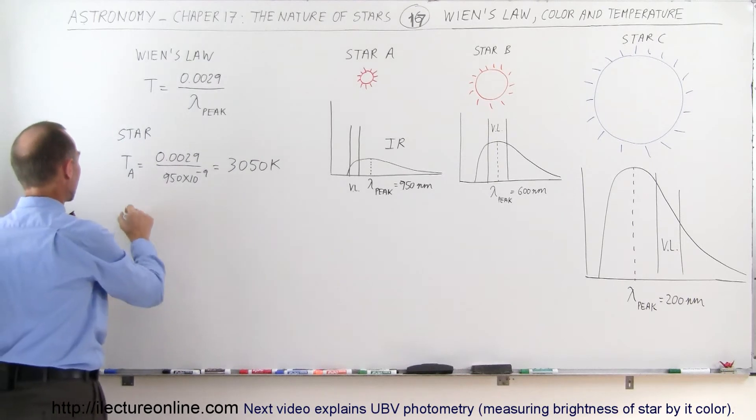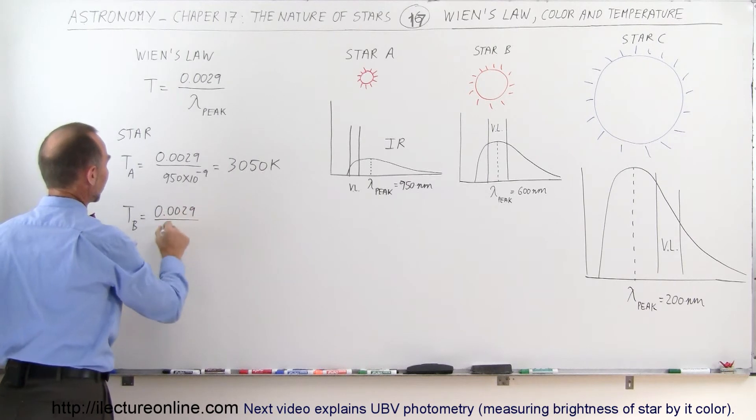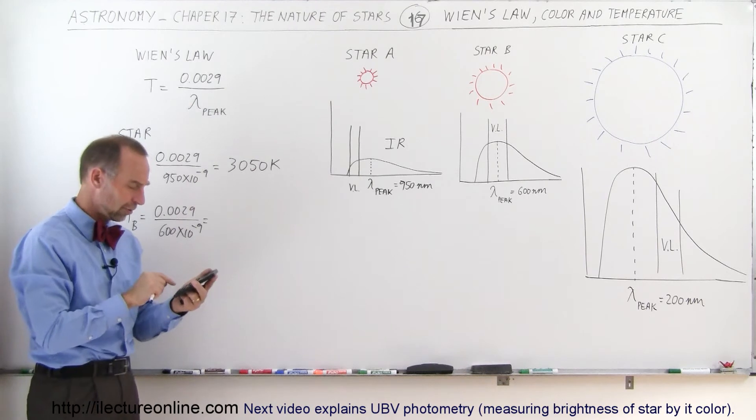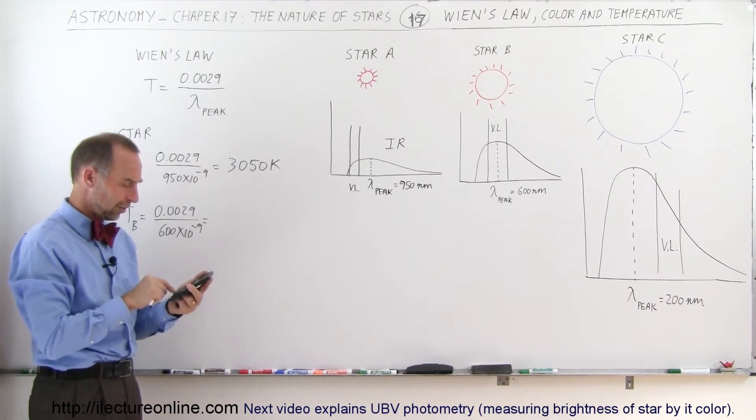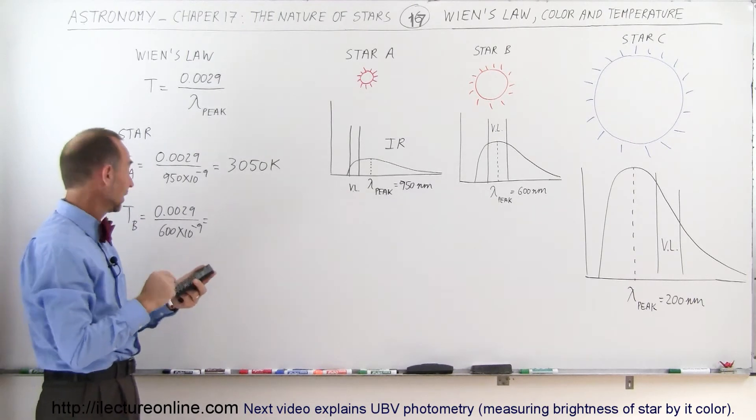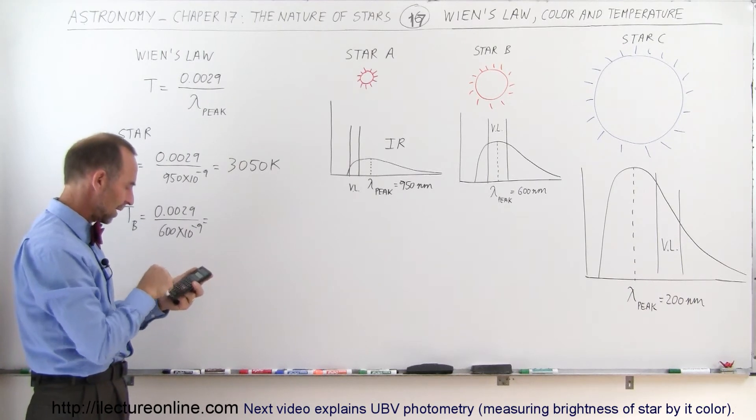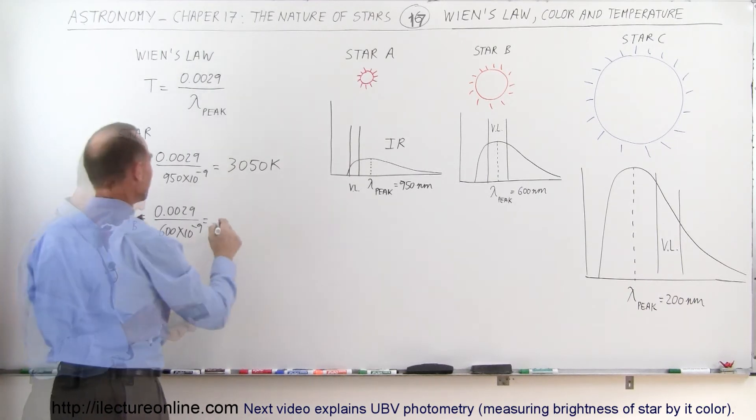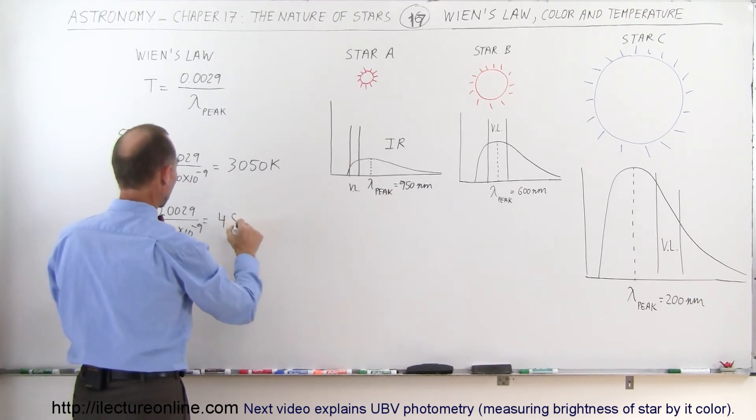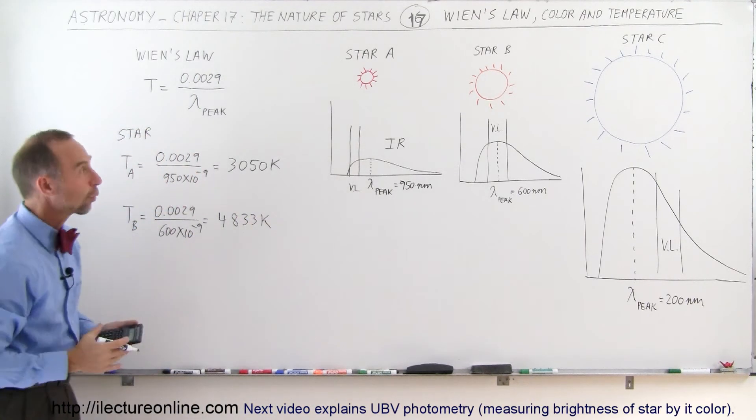For Star B, the temperature equals 0.0029 divided by 600 times 10 to the minus 9 meters—that's 600 nanometers. So 0.0029 divided by 600 E to the minus 9 gives us a temperature of about 4,833 Kelvin, which is appropriate for an orange-looking star.